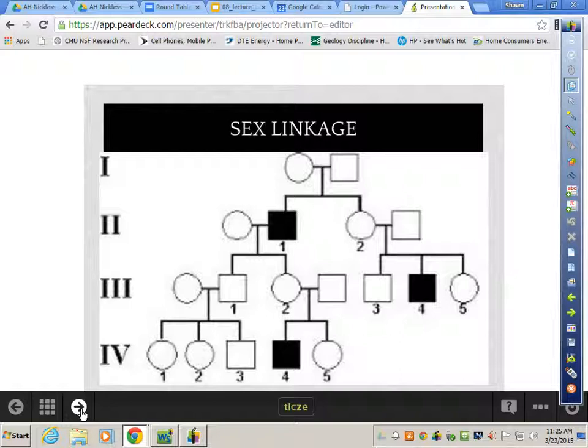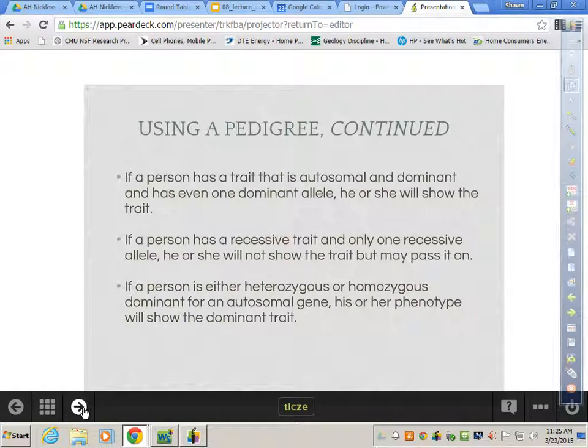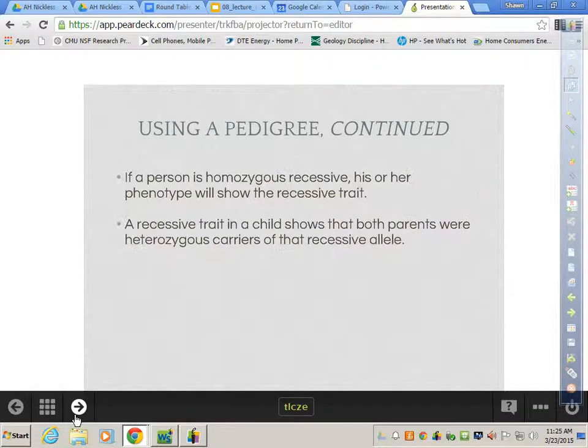If a person has a trait that is autosomal, that means not a sex chromosome, and dominant, and has even one dominant allele, the dominant trait's going to show up. If a person has a recessive trait and only one recessive allele, he or she will not show that trait, but can still pass it on. It can be a carrier. If a person is either heterozygous or homozygous dominant for an autosomal gene, his or her phenotype will show the dominant trait. That's complete dominance. If a person is homozygous recessive, his or her phenotype will show the recessive trait, and that's a recessive trait in a child shows that both parents were heterozygous carriers of that recessive allele. Two brown-eyed individuals can indeed have a blue-eyed child if they are both carriers. And then, of course, there's sex linkage, which leads to break all of the rules.